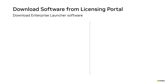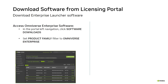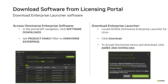To access the Omniverse Enterprise software, from the left navigation click Software Downloads. From the Product Family filter, select Omniverse Enterprise — the view updates and displays the Omniverse install artifacts. Next, locate the NVIDIA Omniverse Enterprise Launcher for Linux and click Download. To accept the license terms and download the launcher, click Agree and Download. Now that you've downloaded the Enterprise Launcher to your Linux host, the next task is creating the required directory structure.